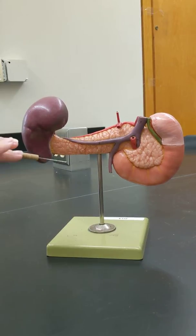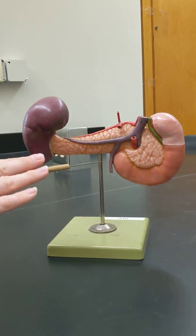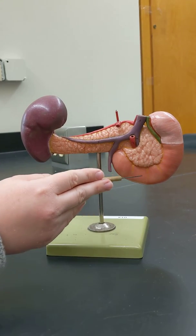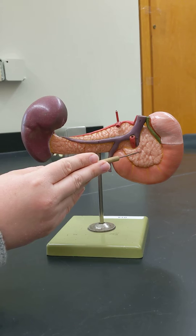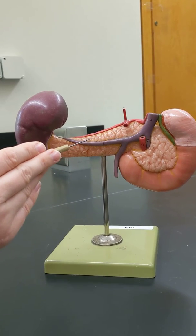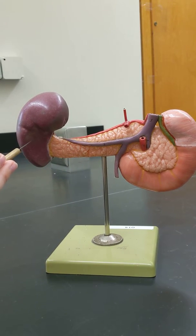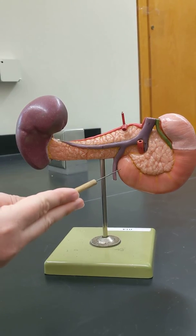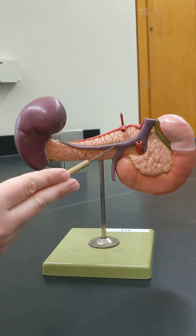So just to orient you, and we'll get more into the digestive system in the next unit, this is part of the small intestine. It's called the duodenum. This is the pancreas, and then this is the spleen. The spleen is on the left side. So we are looking at the posterior aspect of this model.